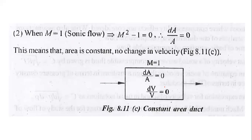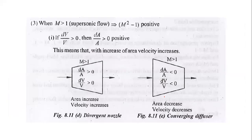When Mach number equals 1 (sonic flow), M² − 1 = 0, so dA/A = 0. This means the area is constant, with no change in velocity at the sonic condition.